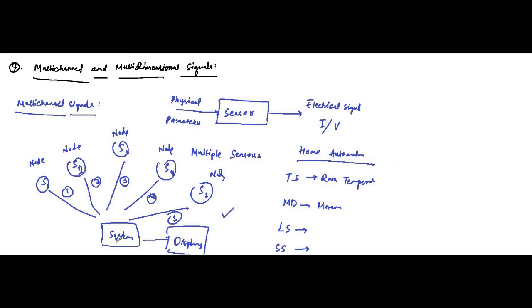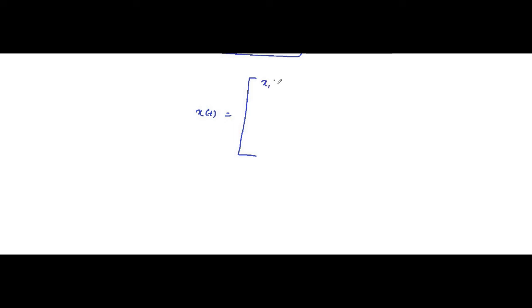We have discussed the basic block diagram representation of a measurement system in biomedical engineering and in sensors and transducers — you can read about it in detail in that playlist. Different kinds of blocks are there for processing, analysis, conditioning, and finally display. These examples represent multichannel signals — multiple channel signals. Generally, such signals are represented in vector form as a matrix: x1(t), x2(t), x3(t), up to xN(t) for N sources. This is how a multichannel signal is represented.